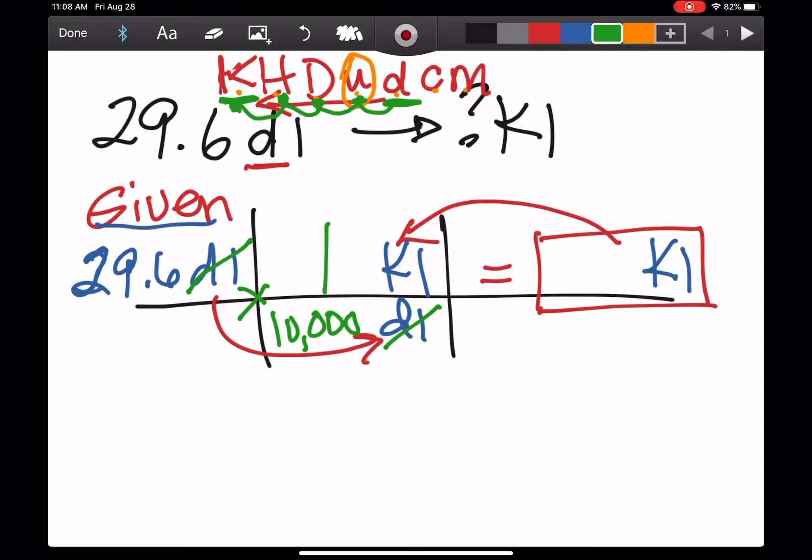Which means 10,000 deciliters equals one kiloliter. It should make sense - the smaller one is on the right, the bigger one is on the left, so we're dividing by 10,000 here, which means we're going to effectively move the decimal one, two, three, four.